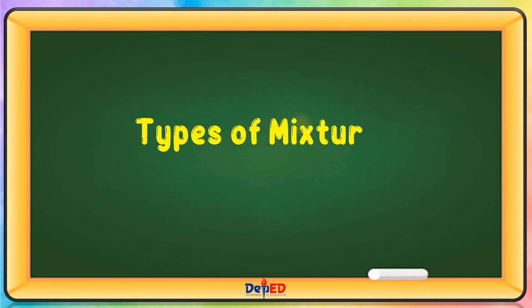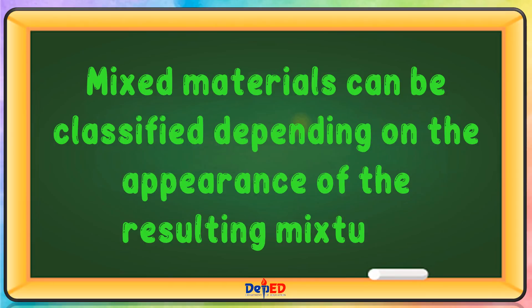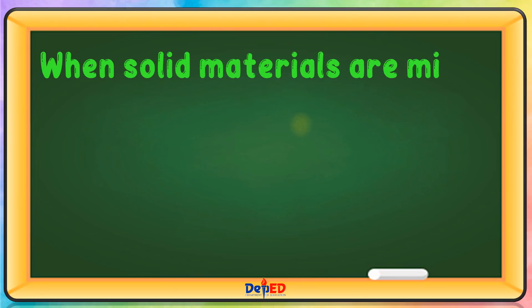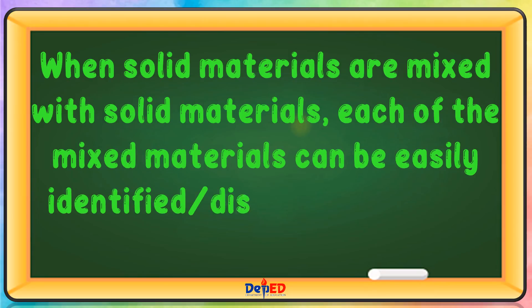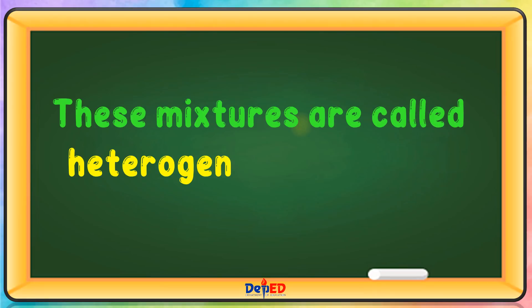Types of Mixtures. Mixed materials can be classified depending on the appearance of the resulting mixture. When solid materials are mixed with solid materials, each of the mixed materials can be easily identified and distinguished from one another. These mixtures are called heterogeneous mixtures.